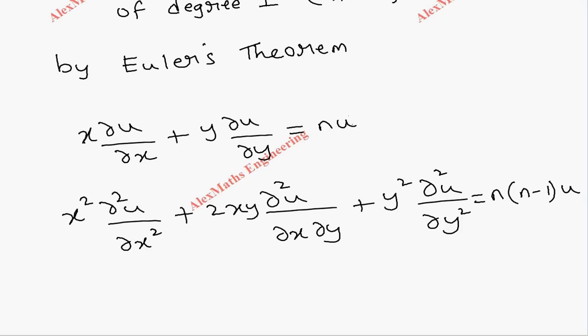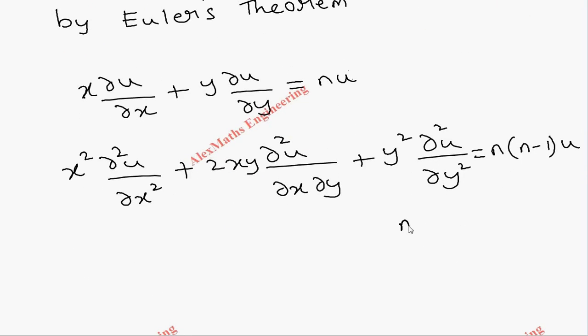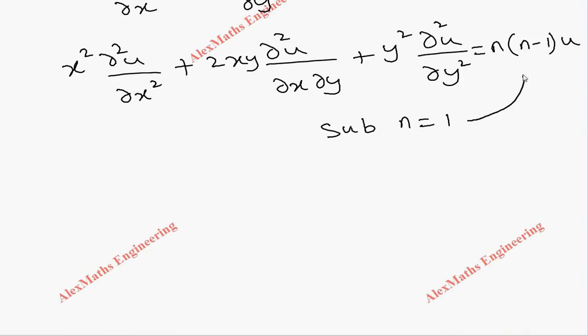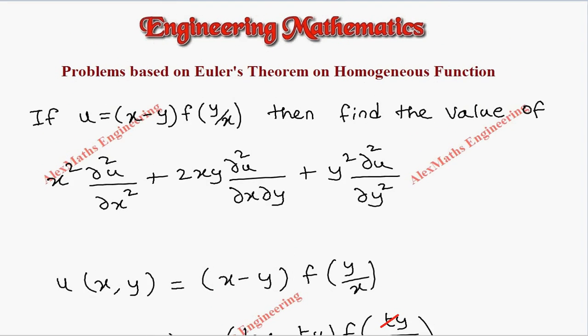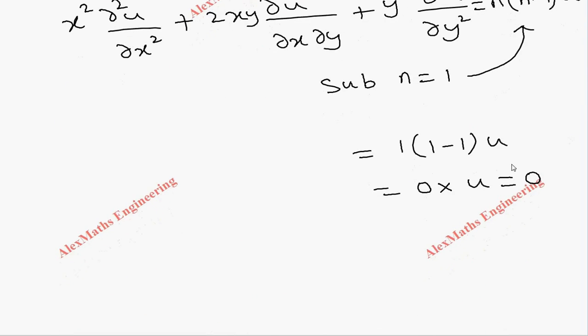Now let's take the second expression and substitute the value of n as 1 because we found the degree as 1. When we substitute here, this entire term will become 1 into 1 minus 1 into u, so 0 into u which is 0. Since we need the value of this entire expression using Euler's theorem, we got the value as 0.